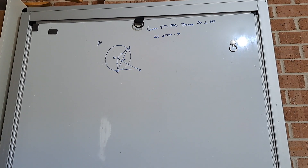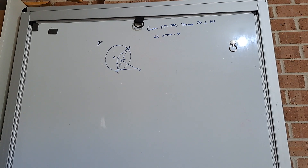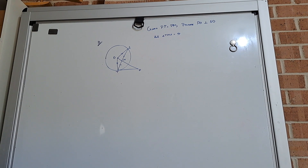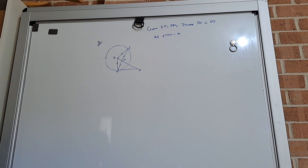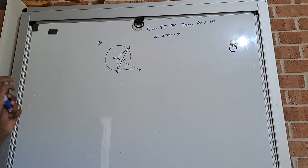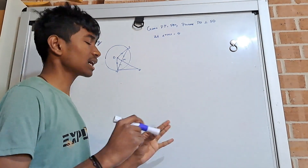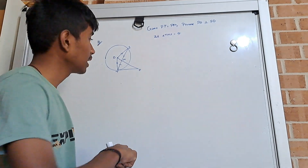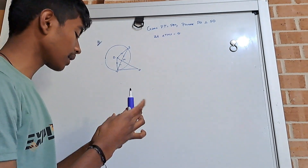In this question we're given that PT is equal to PM and we're asked to prove that PO is perpendicular to SO. The hint that we're given is to let TMP equal theta and start solving it. This is a geometry problem and it really isn't that hard.